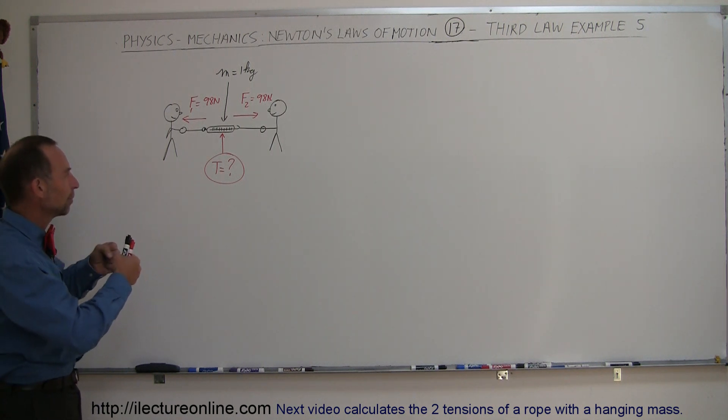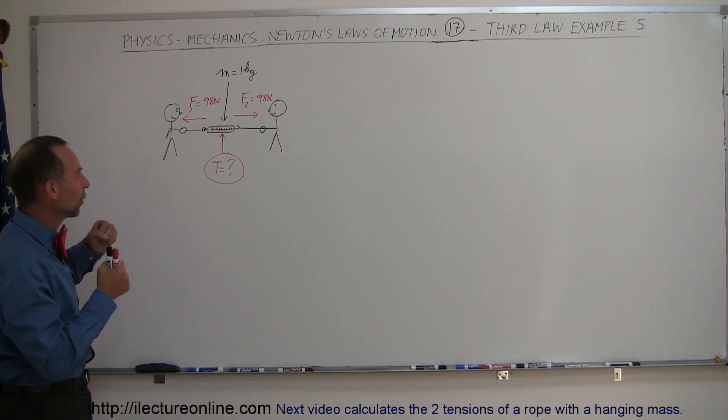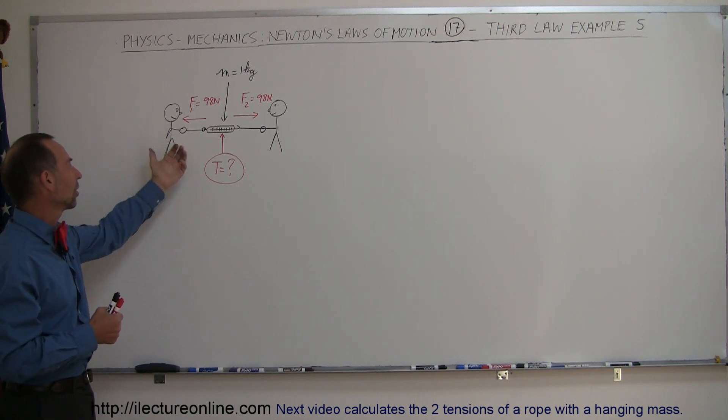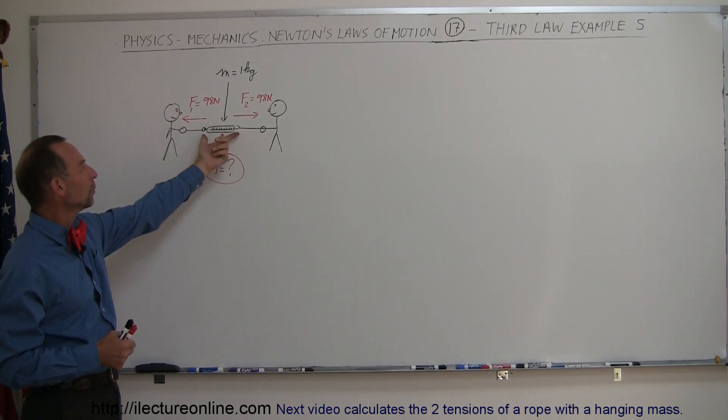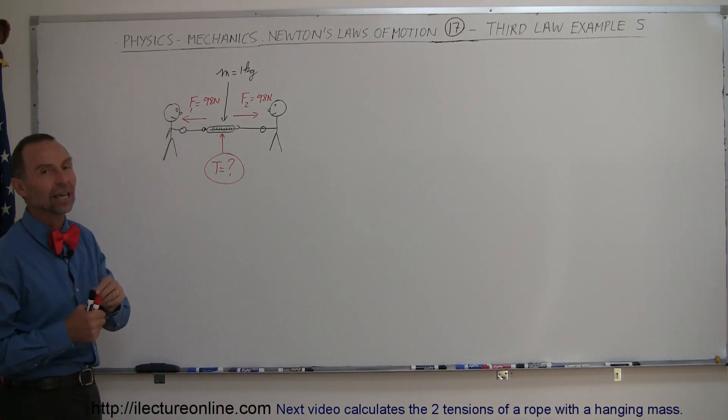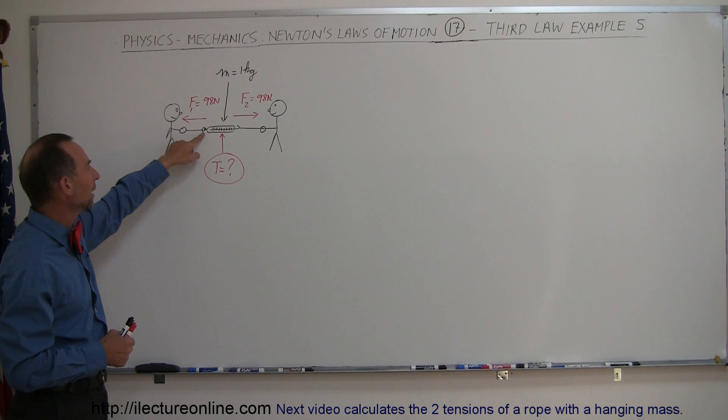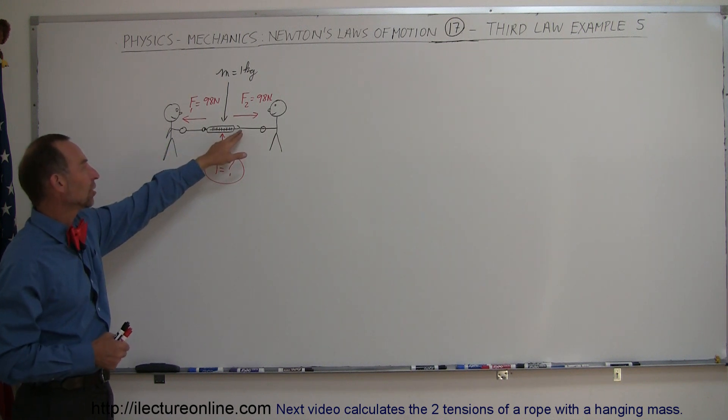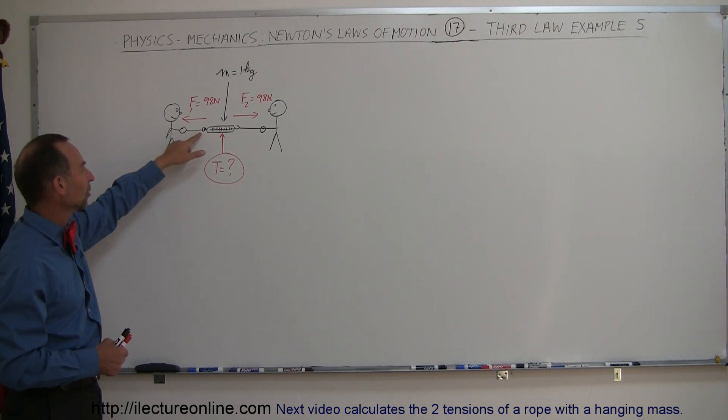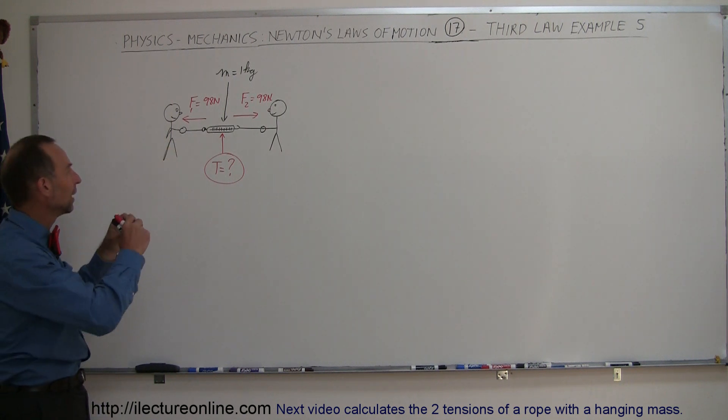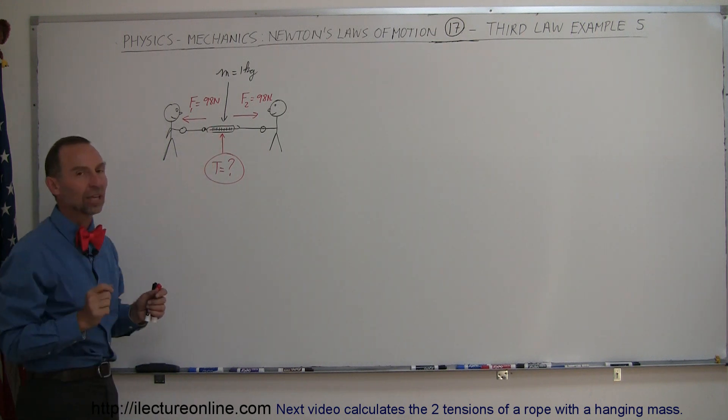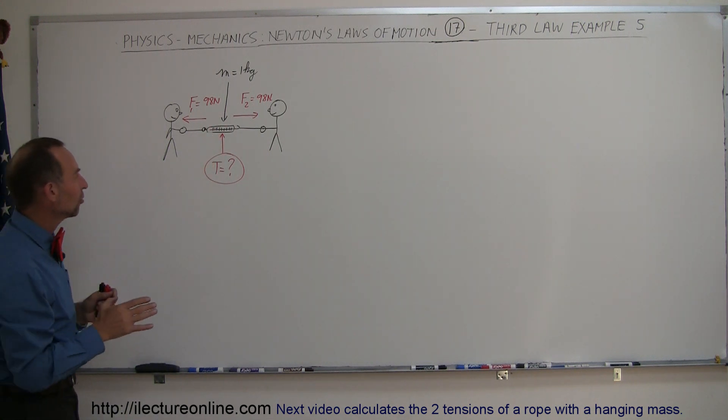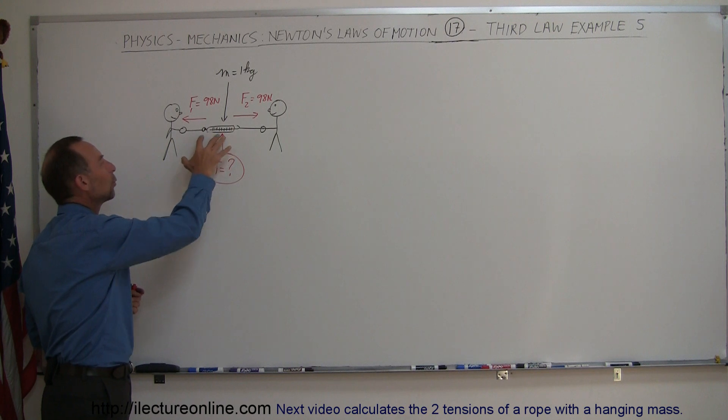So let's say we have two people here pulling on a string in both directions, this person pulling to the left, this person to the right with a force of 98 Newtons. And in between we attach a spring scale with the hook on one end where this hook is attached to the actual spring inside the spring scale and on the other side there's a little ring at the bottom that's attached to the housing of the scale which is not connected to the spring in there. So the question is what would the scale read?